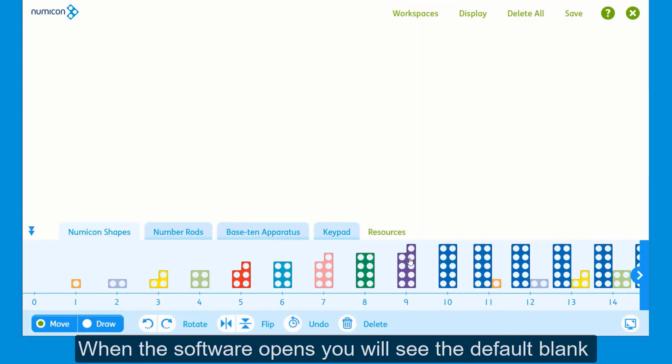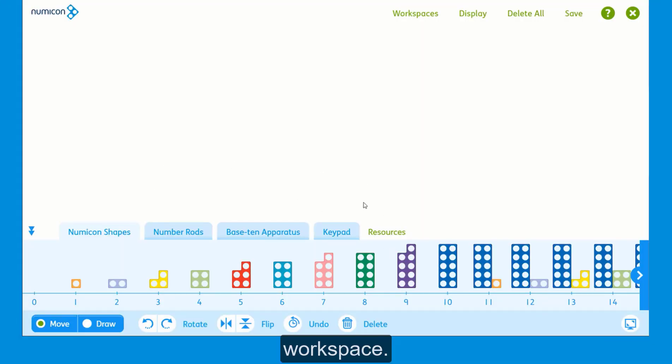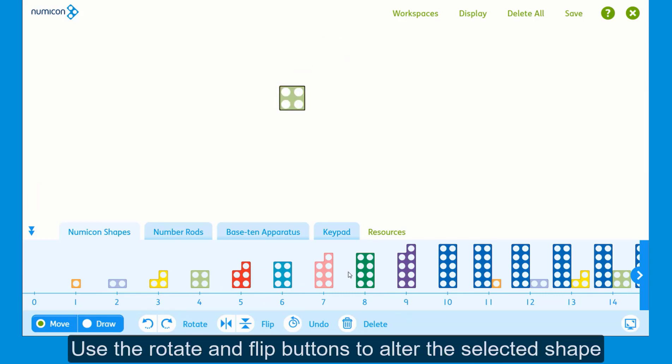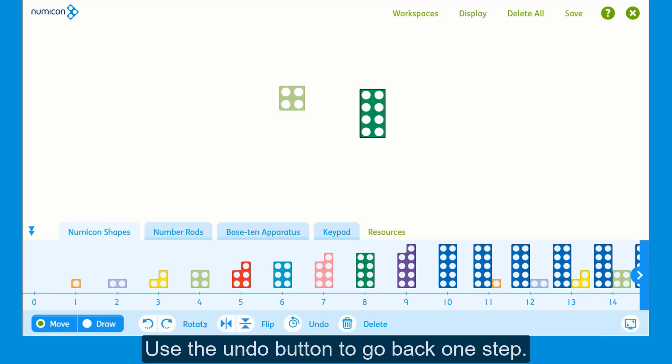When the software opens, you will see the default blank workspace. You can drag an apparatus from the resources bar at the bottom or just tap to add them. Use the rotate and flip buttons to alter the selected shape. Use the undo button to go back one step.